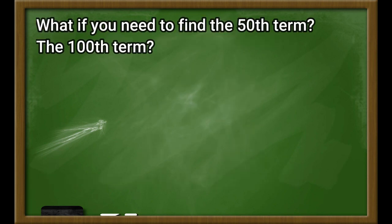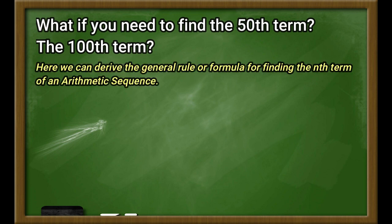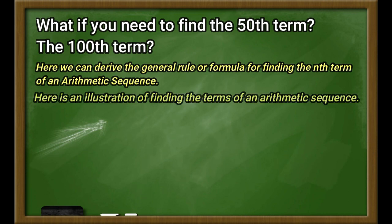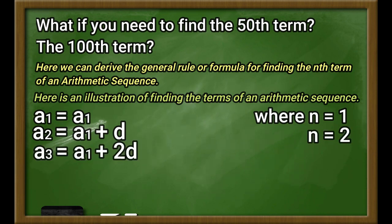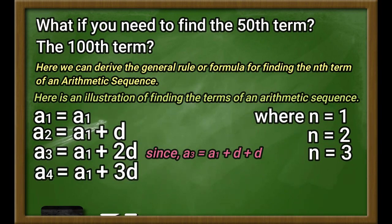What if you need to find the 50th term or the 100th term? This is where we can make a general rule or formula for finding the end term of an arithmetic sequence. Here is an illustration of finding the terms of an arithmetic sequence. A sub 1 is equal to the first term — you are not to add any common difference, and for A sub 1, n equals 1. For A sub 2, it is A sub 1 plus d, where n equals 2. For A sub 3, it is equal to A sub 1 plus 2d, since A sub 3 equals A sub 1 plus d plus d, and n equals 3. For A sub 4, we have A sub 1 plus 3d, since A sub 4 equals A sub 1 plus d plus d plus d, and n equals 4.